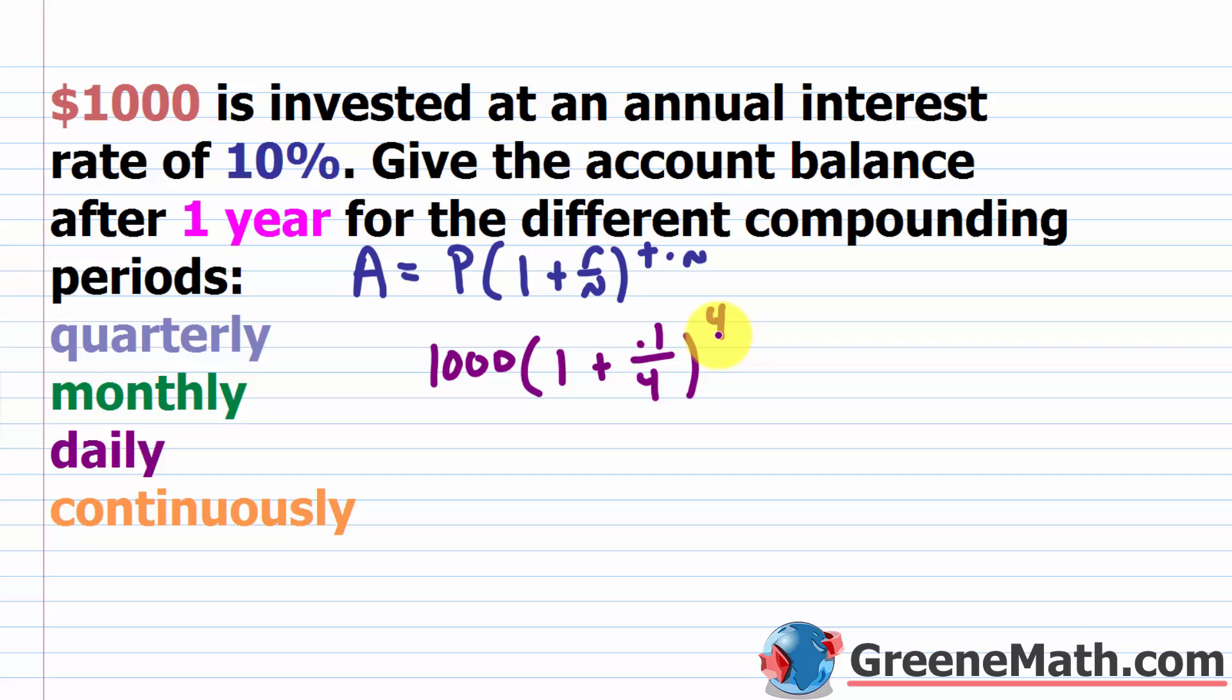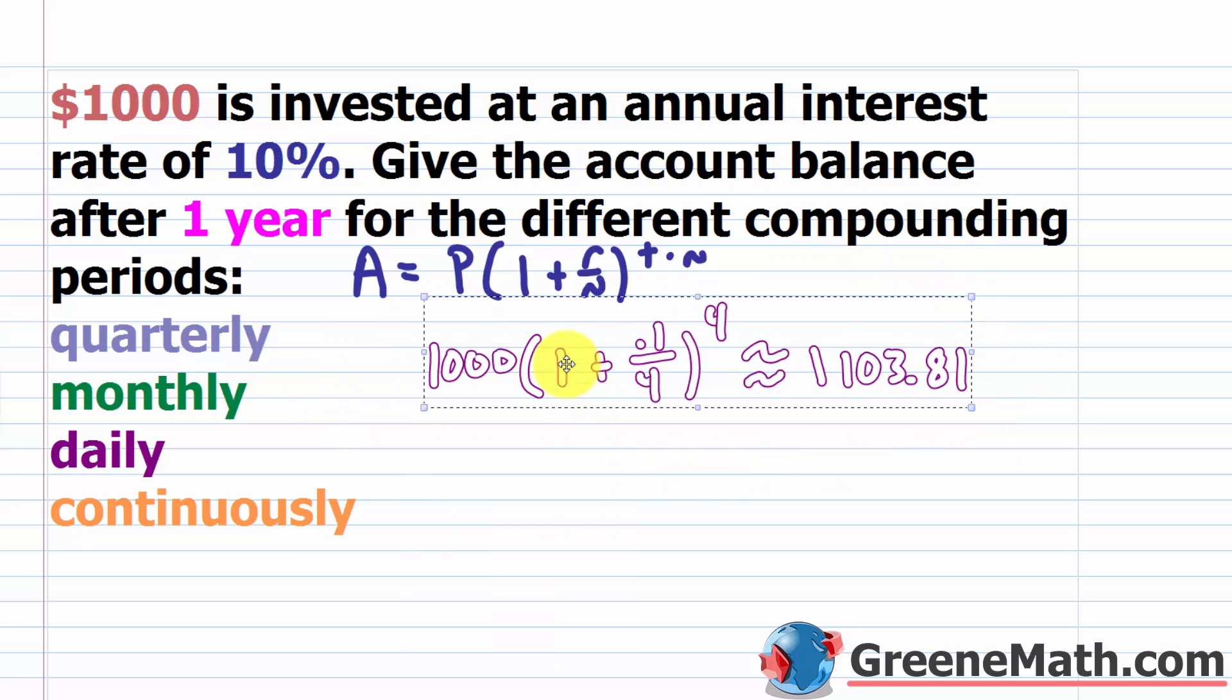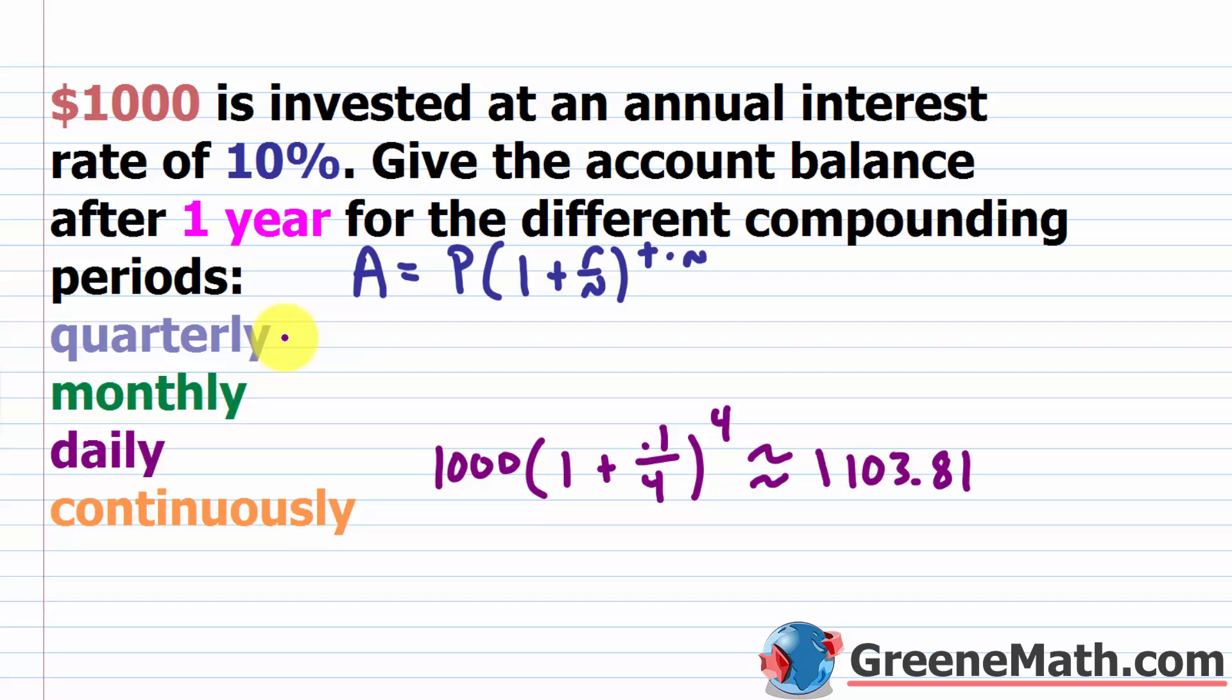If you punch this up on a calculator, you're going to get approximately $1,103.81. Now for a given interest rate and a given time period, if I increase the number of compounding periods or how often I give you your interest, so that interest is earning interest, I should have more money at the end of that time period.